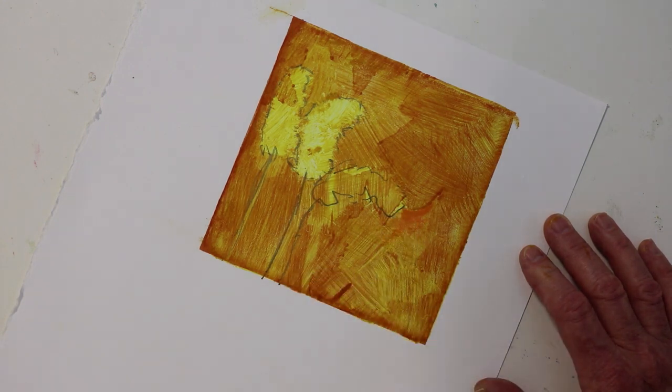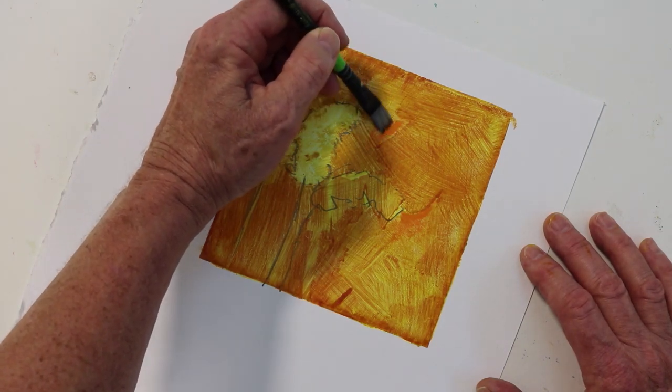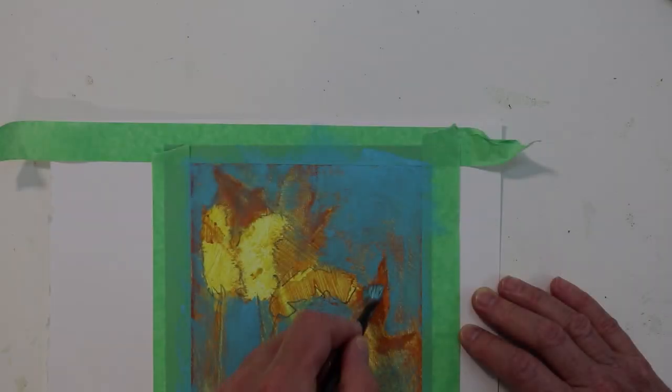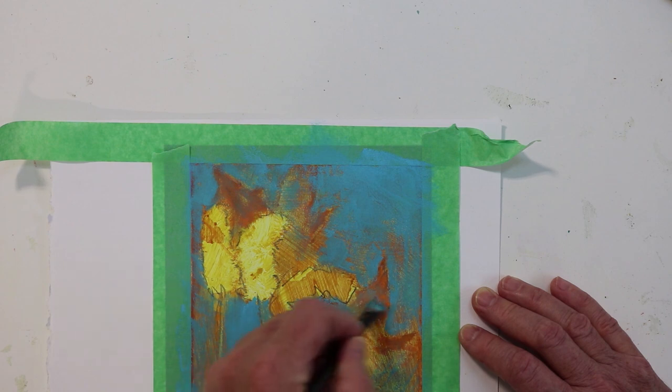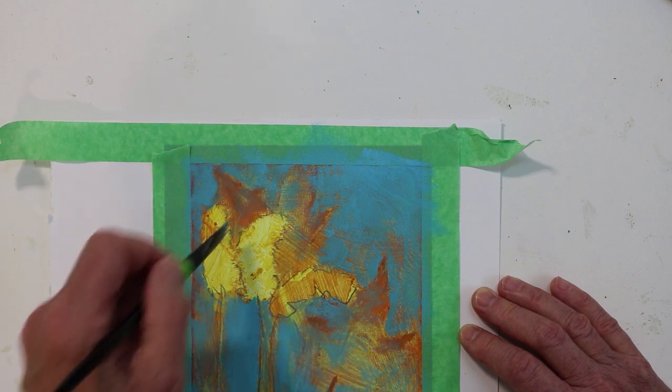I painted some of the edges of the maple leaves again just to make them stand out a little bit. Then I took some blue paint and brushed it all over around the maple leaves and around the piglets.